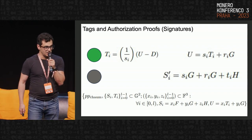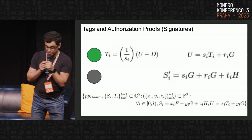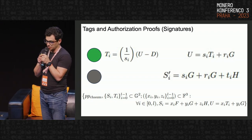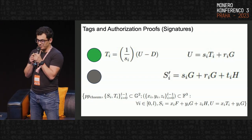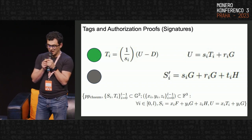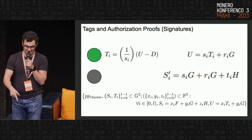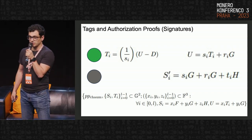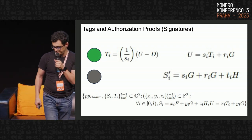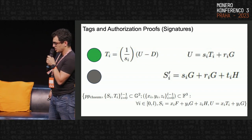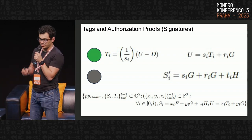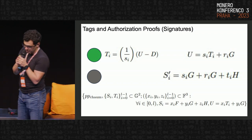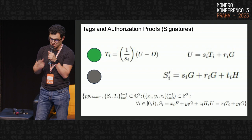Linking tags play an important role in preventing double spending and proving ownership. They are derived from the coin's serial number — specifically the value s_i in the formulas, the same value encoded in the serial number commitment. The Chaum-Pedersen proofs are sigma protocols that help prove that two commitments are encoding the same serial number value.